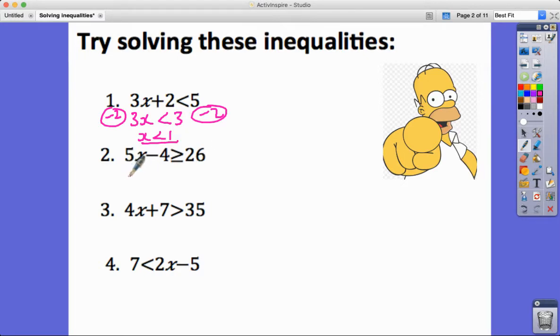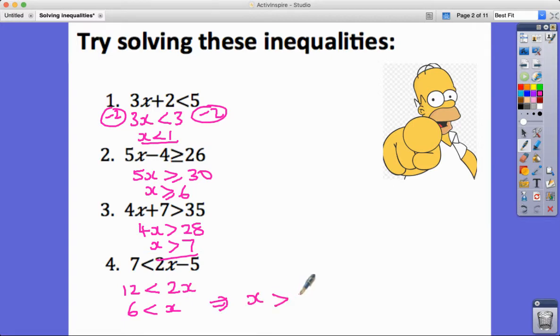Here in this one I was going to add 4 to start with. I'm going to end up with 5x greater than or equal to 30, x greater than or equal to 6. In this one I subtract 7 first to get 4x greater than 28, so x is greater than 7. And in this one, same thing, it's just opposite ends. I'm going to add 5 first, so I get 12 less than 2x, and then divide by 2, so I get 6 less than x, or x greater than 6. I personally prefer to write that with the x first, so these are like crocodiles' teeth, they eat the bigger thing, so x is greater than 6.